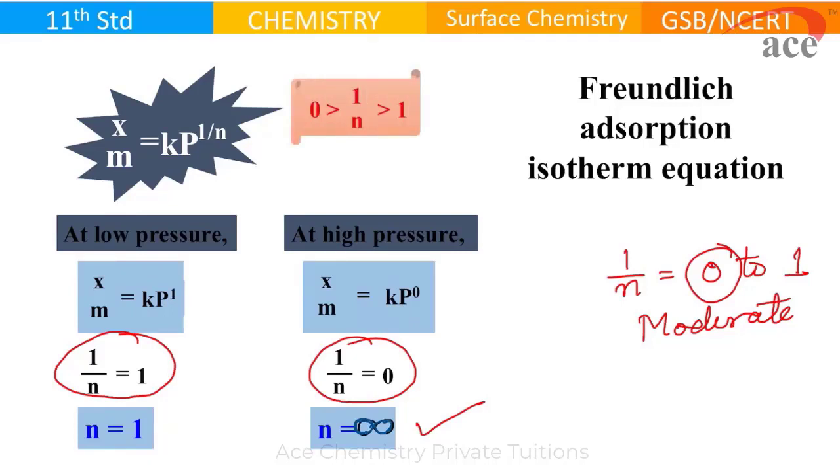So what we conclude: for moderate pressure, we always have value of 1 by n between 0 to 1. Freundlich adsorption isotherm equation talks with respect to moderate pressure. Now we check next - here we are using this symbol as infinite. I repeat, 1 by n value is between 0 to 1, which clearly indicates n value is between 1 to infinite.